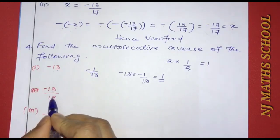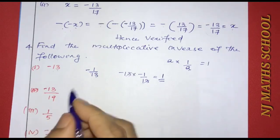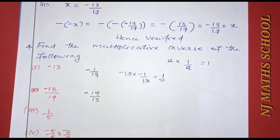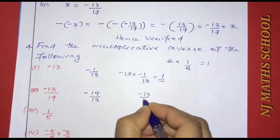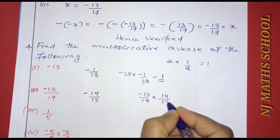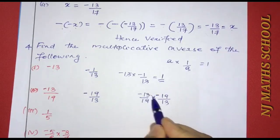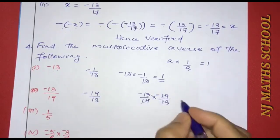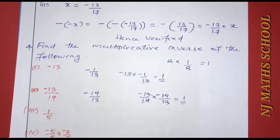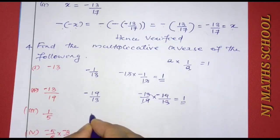For negative 13 by 19, the multiplicative inverse is negative 19 by 13. We verify: negative 13 by 19 into negative 19 by 13 — the negatives multiply to give positive 1. For 1 by 5, the multiplicative inverse is 5. We multiply 1 by 5 into 5 to get 1.